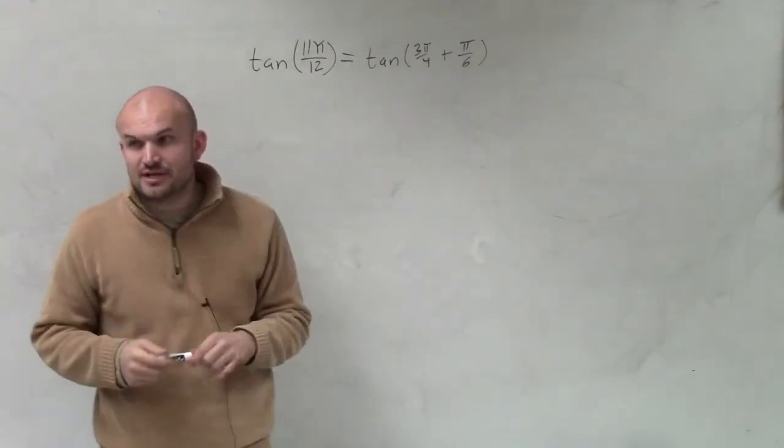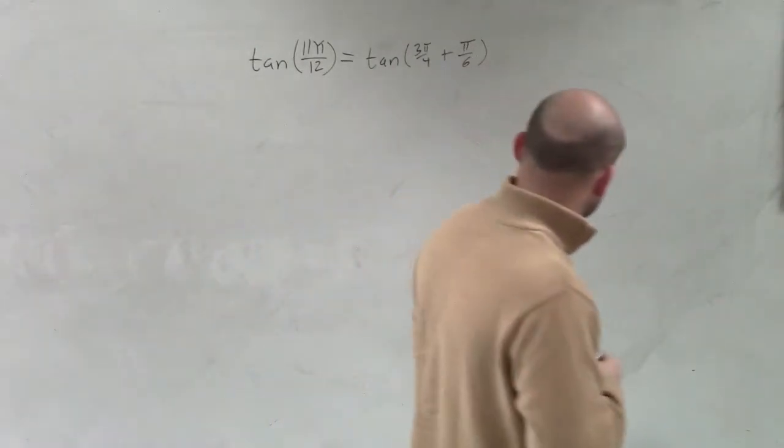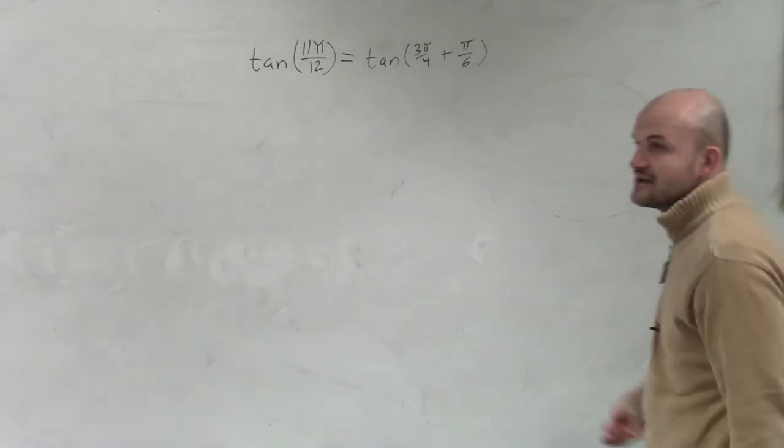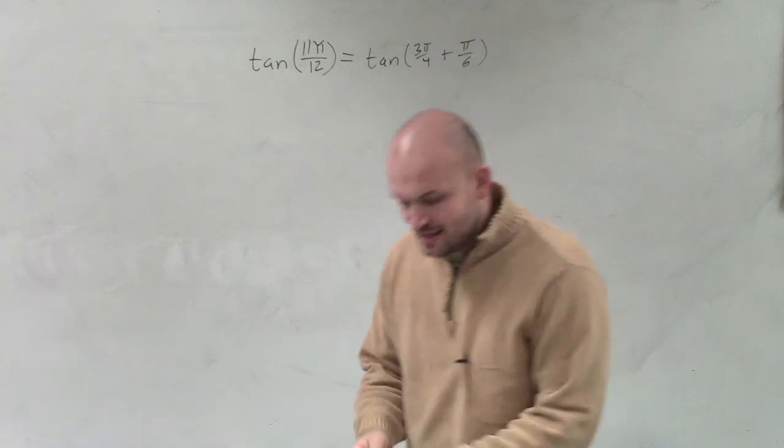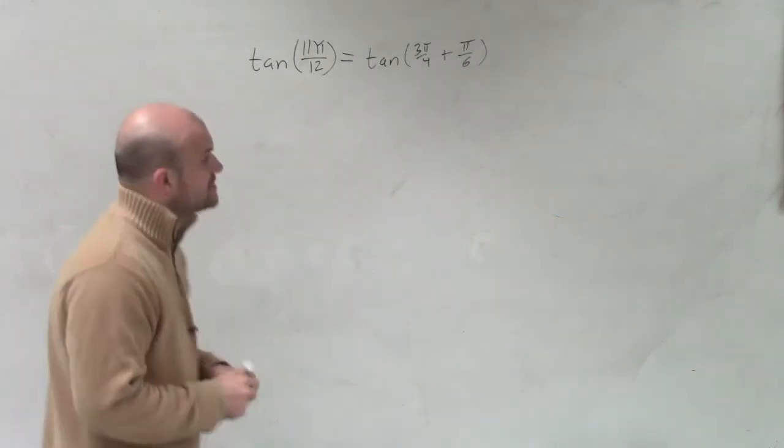So what we have in this case is tangent of 11π over 12 equals tangent of 3π over 4 plus π over 6. Obviously, we cannot evaluate tangent of 11π over 12 directly, so we need to use our tangent formula.